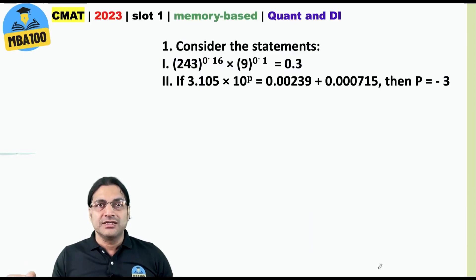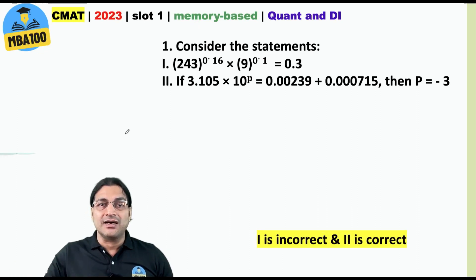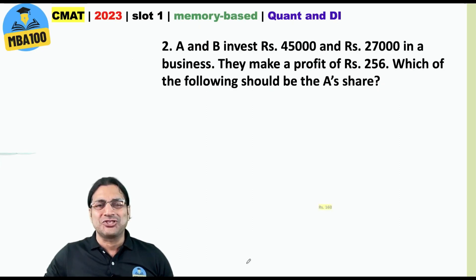Here is your first question and here the answer was 1 is incorrect and 2 is correct and in fact if you solve this right this value will come out to be 3 and not 0.3. This is absolutely all right. A and B and where I am sure everyone would have got it right. The answer is rupees 160.